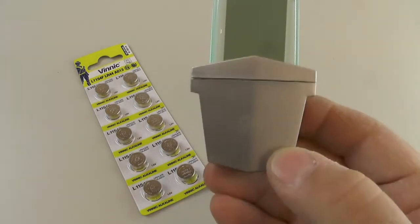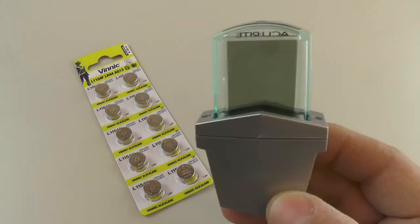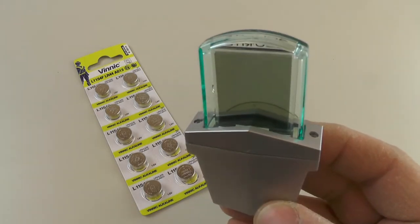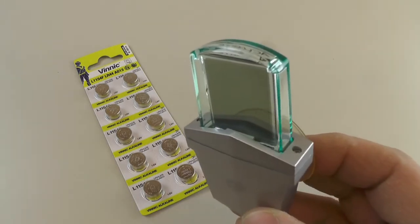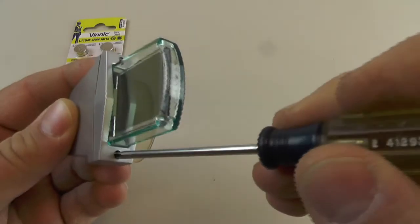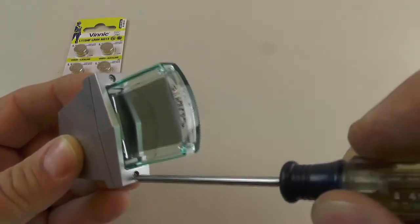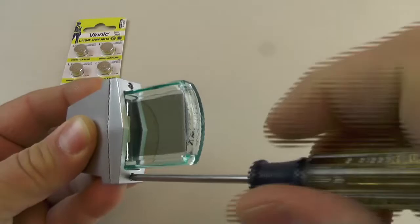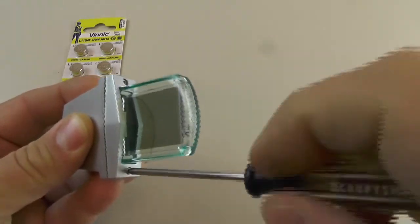So what we're going to do is we're going to open up this thermometer and change out the batteries so let's get started. It's actually pretty easy to do there's only two screws, one here and one here, and all they do is hold this little plastic cover down.